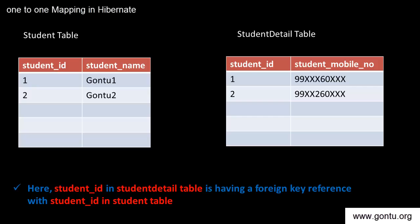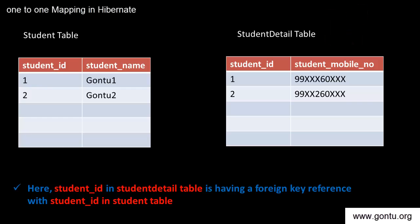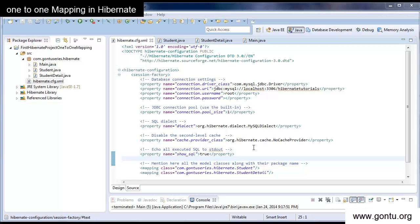In terms of database, you establish a one-to-one relationship using foreign key references or constraints. Here, StudentID in the StudentDetail table is a foreign key reference of StudentID in the Student table. Because of this constraint, the StudentDetail table will only accept values of StudentID that are present in the Student table. Now, how do we represent such a relationship in Java model classes in Hibernate? That's what we're going to learn in this tutorial.